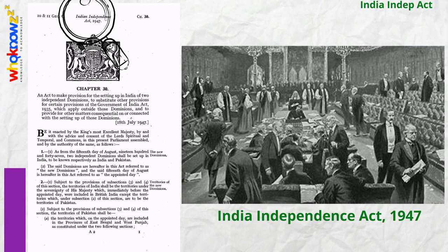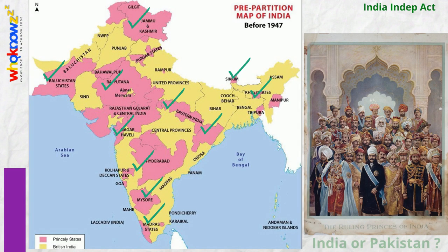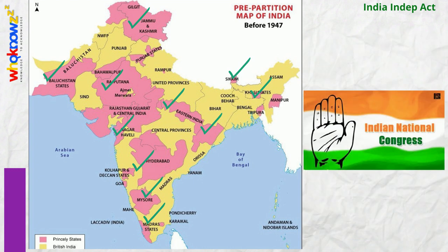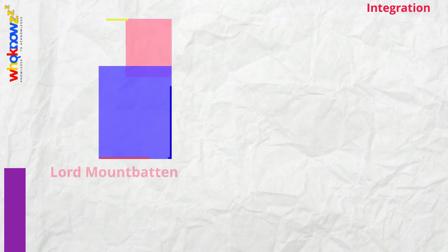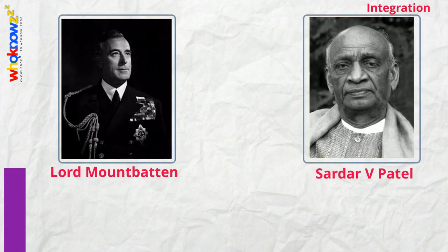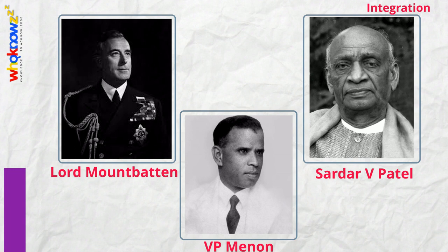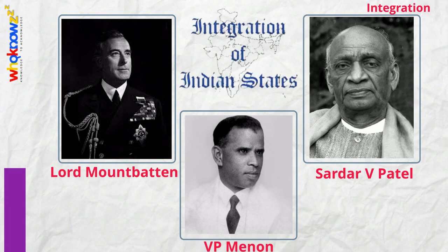The India Independence Act passed by the British Parliament gave these states the option to accede to India or Pakistan. The political integration of these territories into India was a declared objective of the Indian National Congress, and the Government of India pursued this over the next decade. Through a combination of factors, Lord Mountbatten, Sardar Vallabhai Patel, and VP Menon convinced the rulers of the various princely states to accede to India.